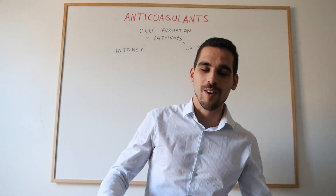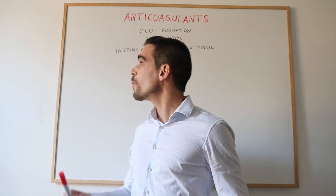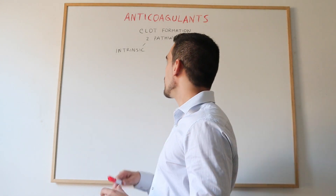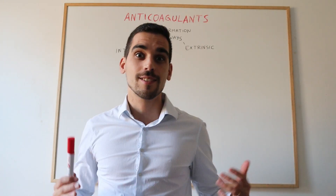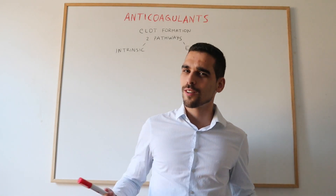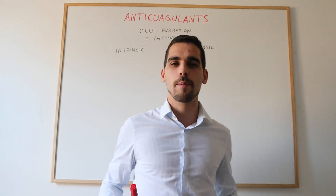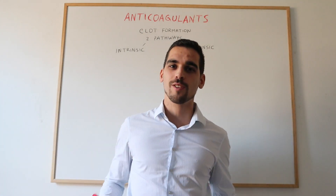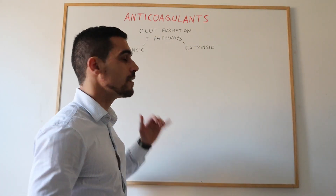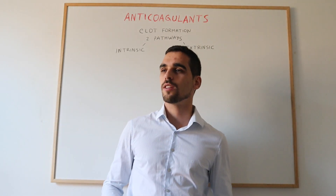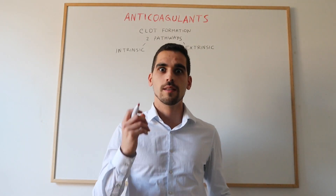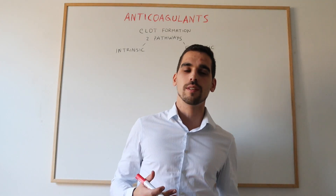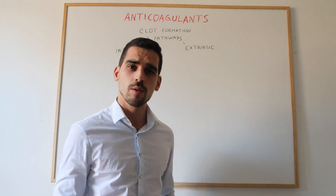In today's video we'll talk about anticoagulants. To understand anticoagulants it's really important to understand how clot formation happens. There are two pathways for clot formation. The first one is the intrinsic pathway, in which the blood vessel wall is damaged and it releases collagen.